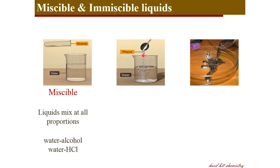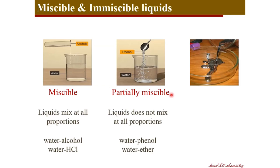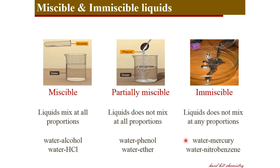Coming to the phenol and water system, you can see that phenol and water are not completely miscible. They do not form a single phase at all temperatures and compositions. Only at certain compositions and temperatures do you get a single phase from those two liquids. Such systems, which are miscible only at certain proportions and certain temperatures, are called partially miscible systems. And for mercury and water, they are immiscible — at any composition and temperature they are not miscible; they form two separate phases, two separate layers in your vessel. But remember, the perfectly immiscible system is not real — that is an ideal case.